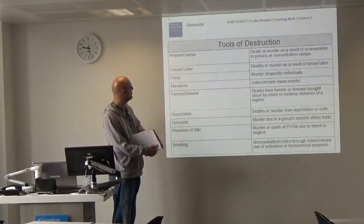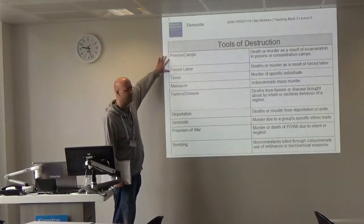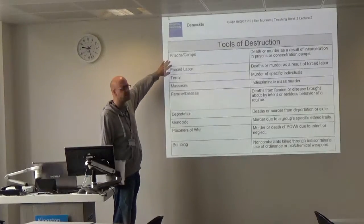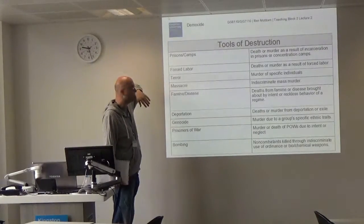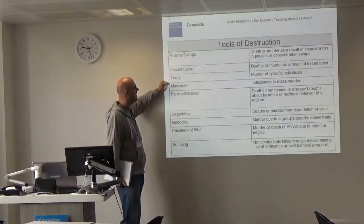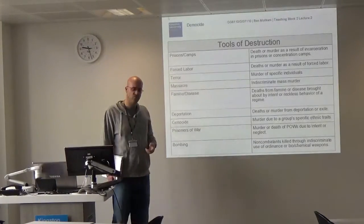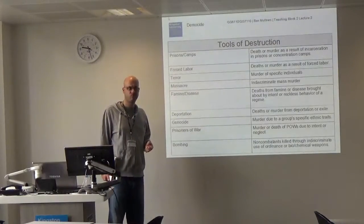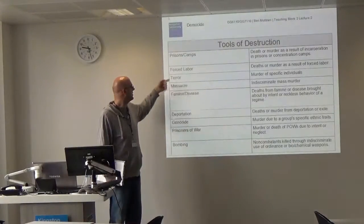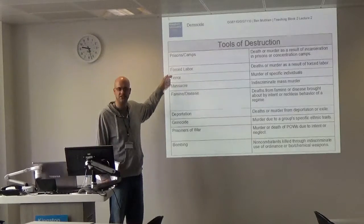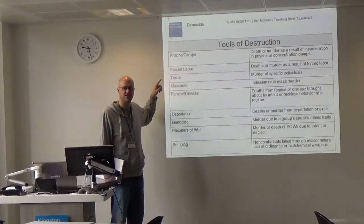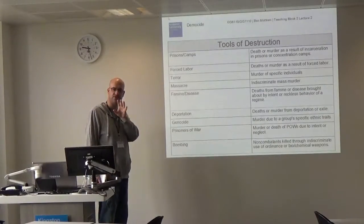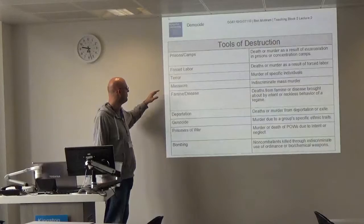Forced labour is pretty much self-explanatory — these two, forced labour and prison camps, were the main tools of Soviet Russia and are used extensively under North Korea currently. Terror is when you're targeting specific groups — think of the Night of the Long Knives under Nazi Germany, or the Stalinist purges when you're looking for seditious elements of your population.